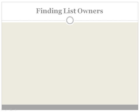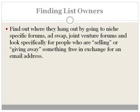Let's talk about finding list owners — actually going out on Google, going out on forums and finding list owners. There are several ways you can go about doing this. You can find out where they hang out by going to niche-specific forums. If you can figure out where these types of people hang out, simply by going there you can build a relationship and get them to join your giveaway.